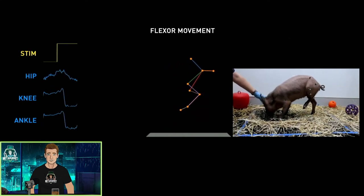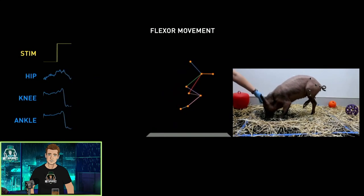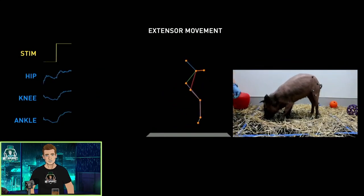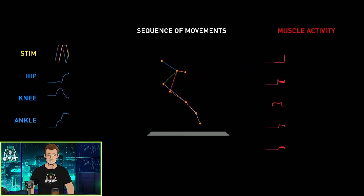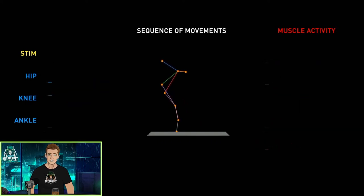the movement of the joints of the pig. As you can see on the left in yellow, stimulating a specific electrode on one thread causes a flexor movement of the left hind leg. Stimulating another electrode causes an extensor movement of the same leg. Researchers are able to stimulate a variety of threads and produce different movements that they can then sequence together to